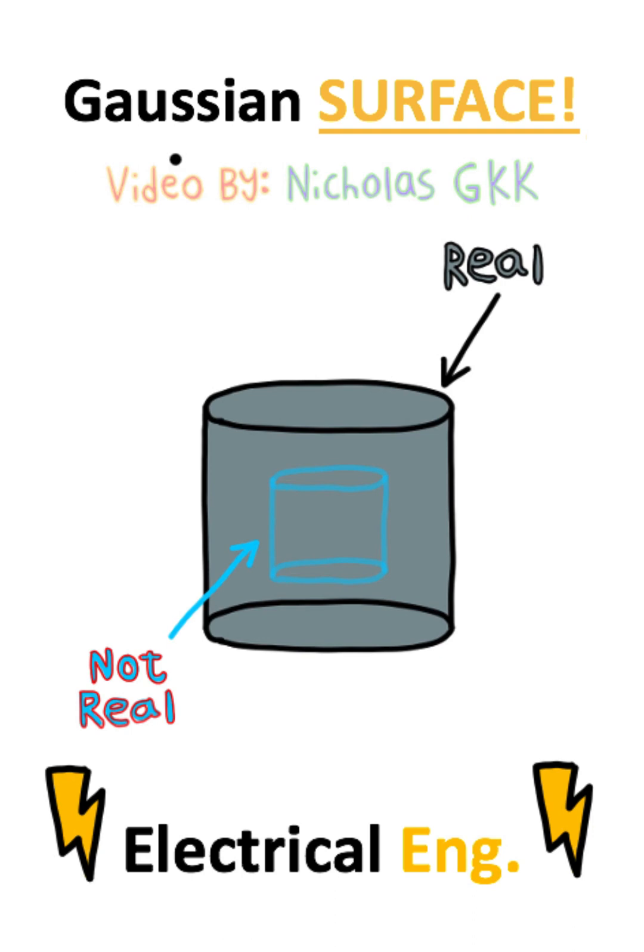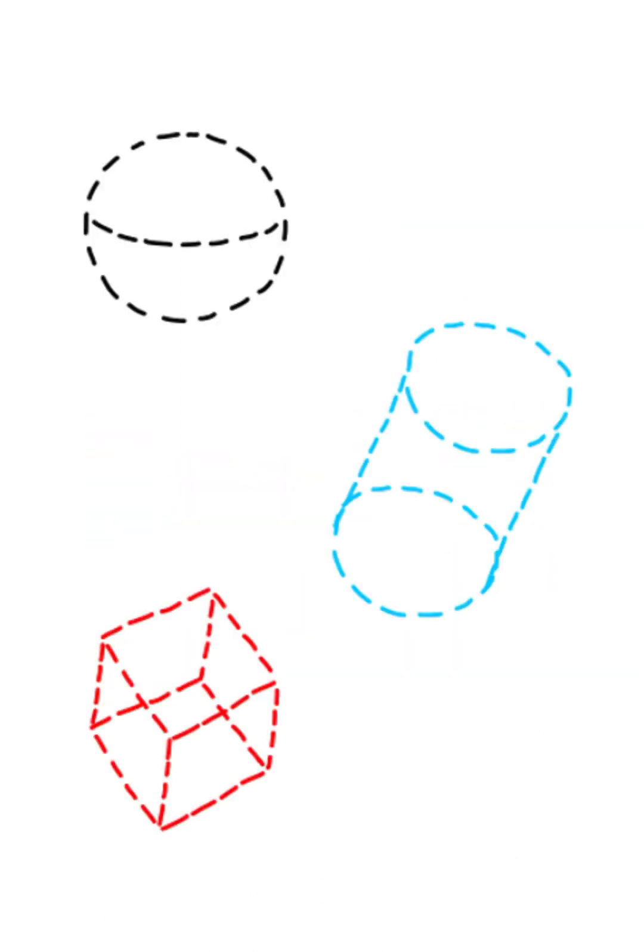Physics students are often confused by the concept of Gaussian surfaces. Now here's the thing, Gaussian surfaces are not actually real. They're imaginary geometries that we use in physics.